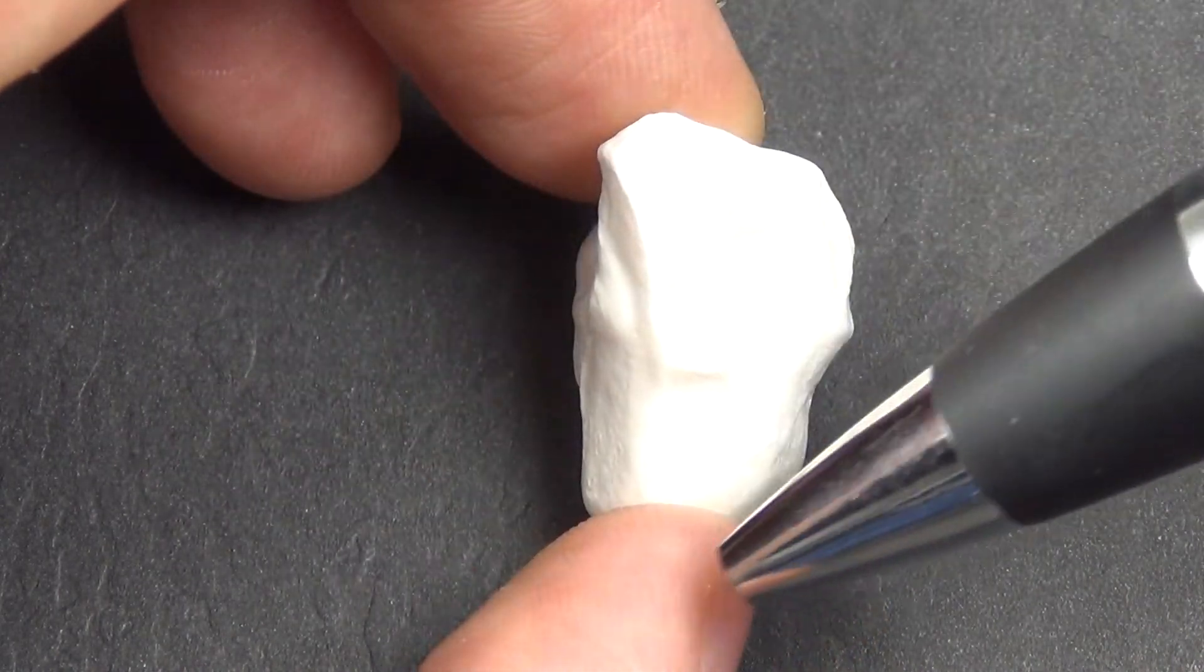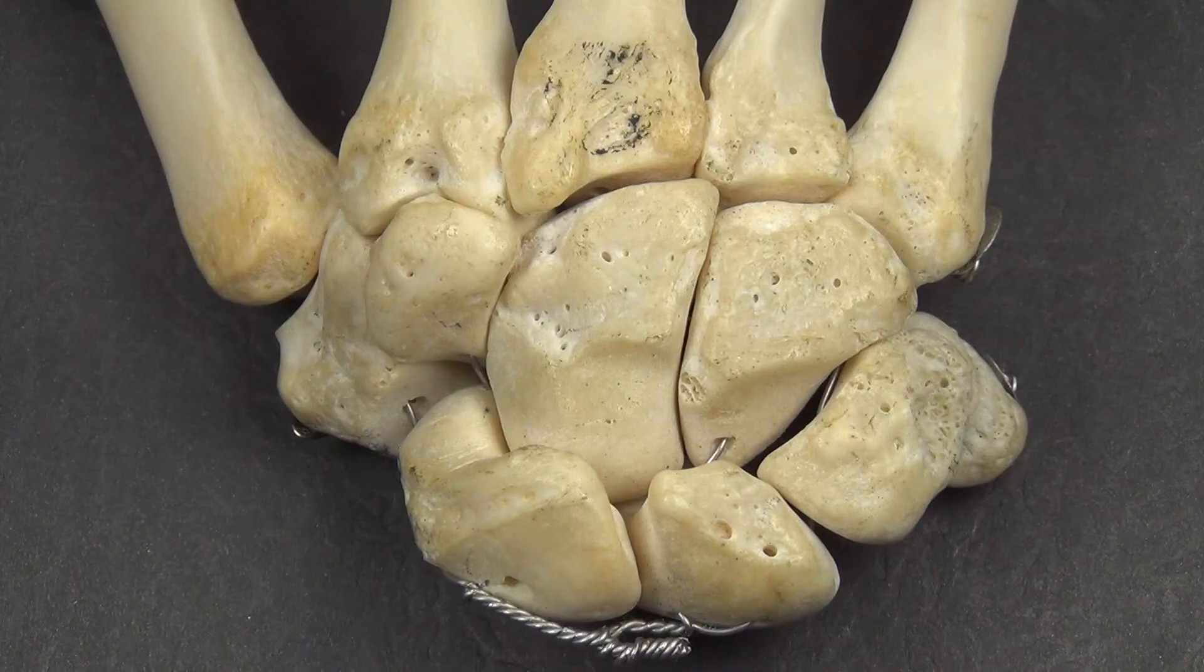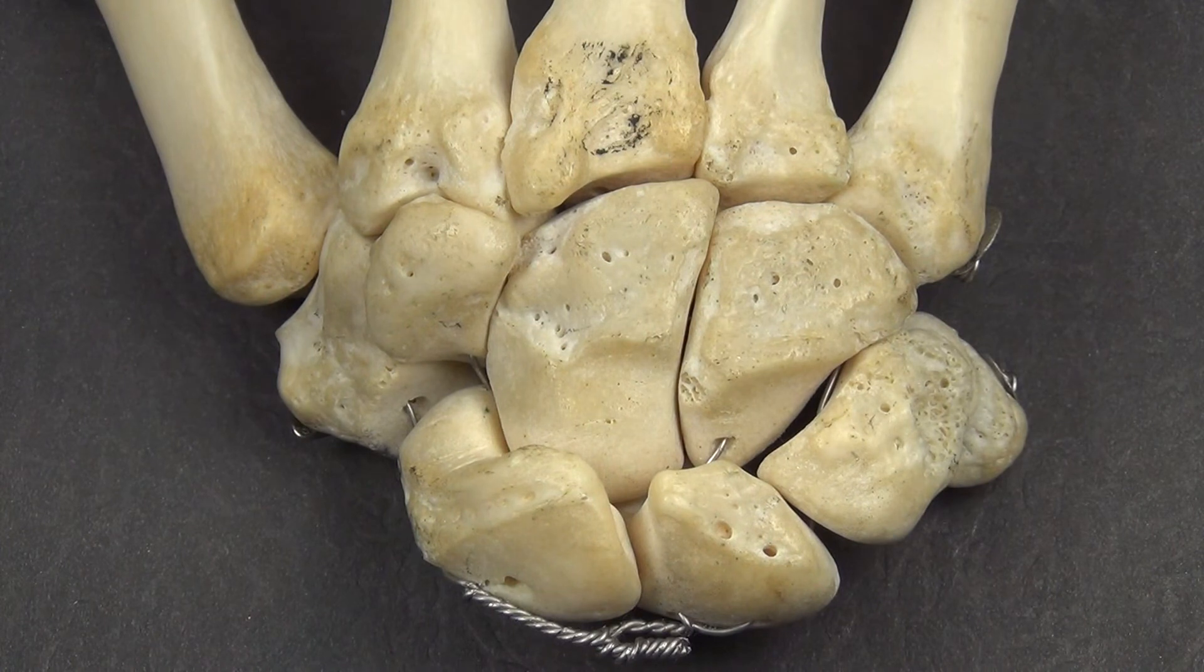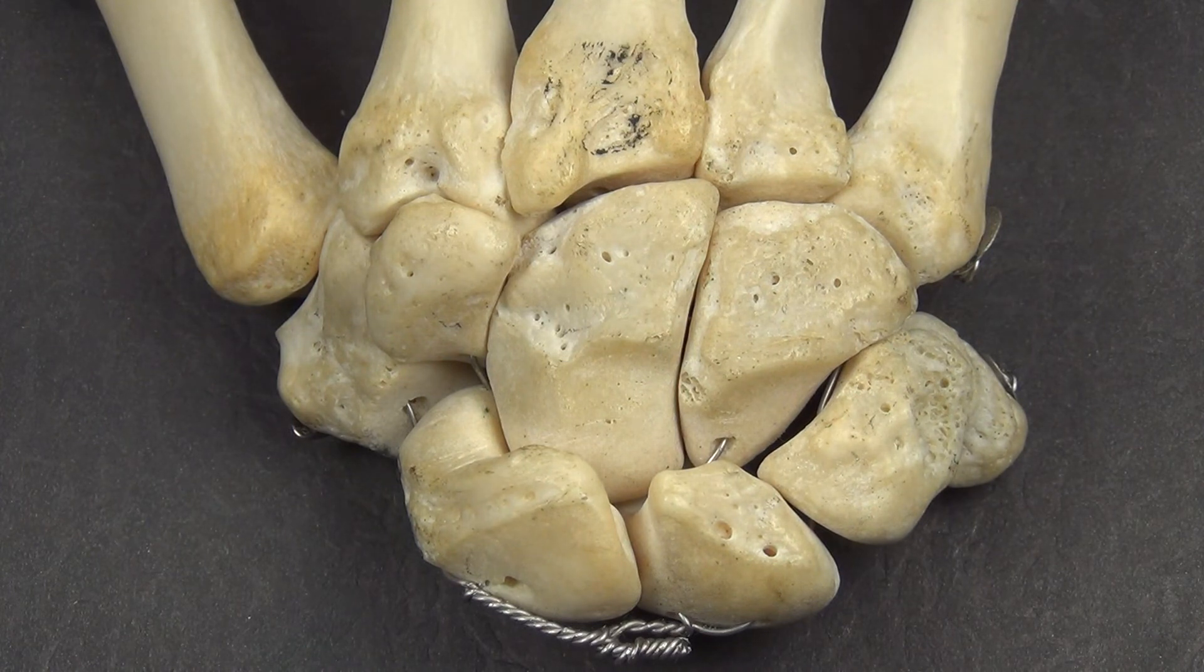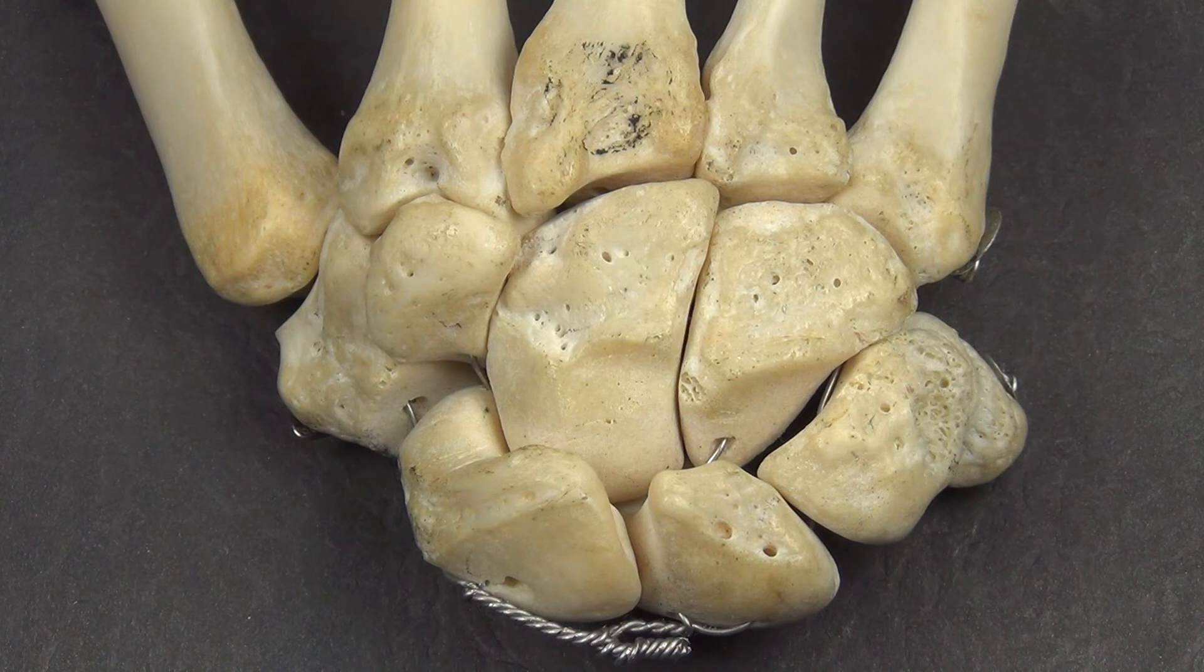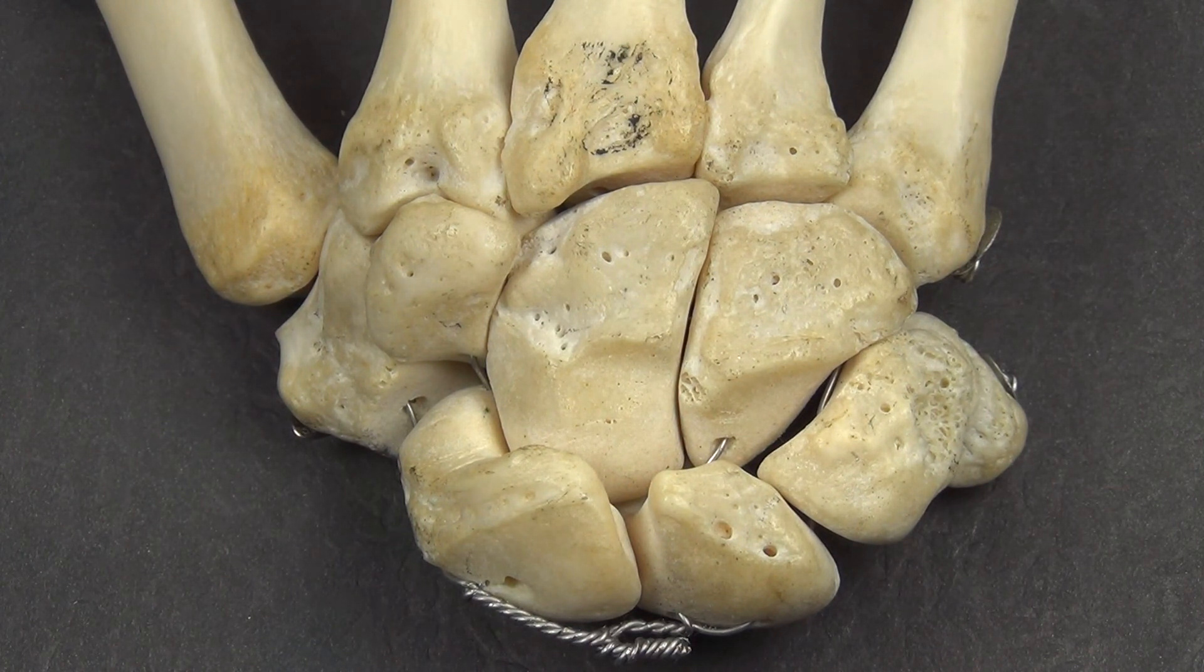The capitate is rarely fractured because of its protected position. It's surrounded by a number of bones. Scaphoid capitate syndrome is a combination of a fracture of the capitate and the scaphoid, in which the head of the capitate rotates 90 to 180 degrees.